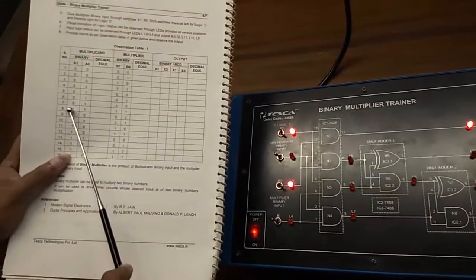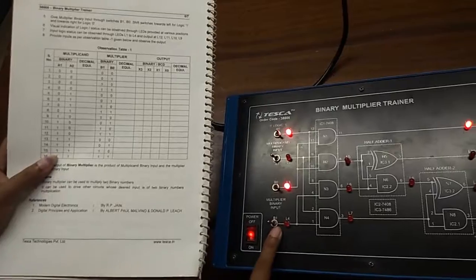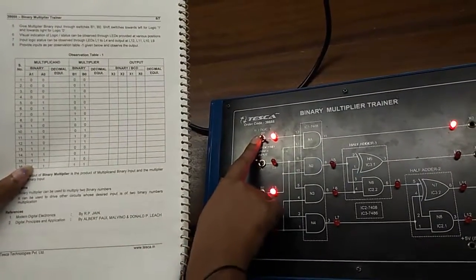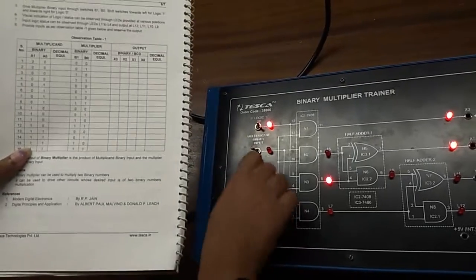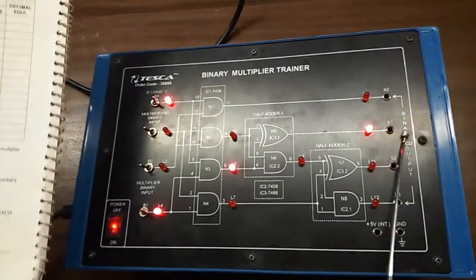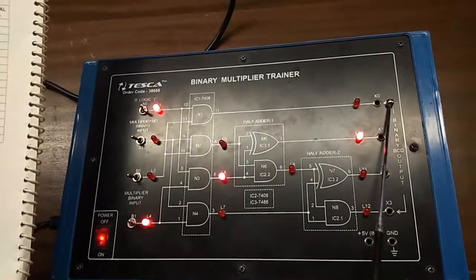Now I am giving number 7 it is 0 1 and 1 0. We can see that output x1 is glowing. Our output will be 0 0 1 0.